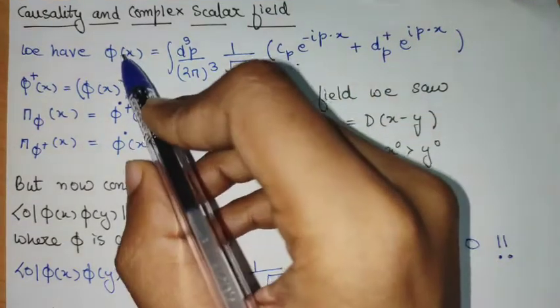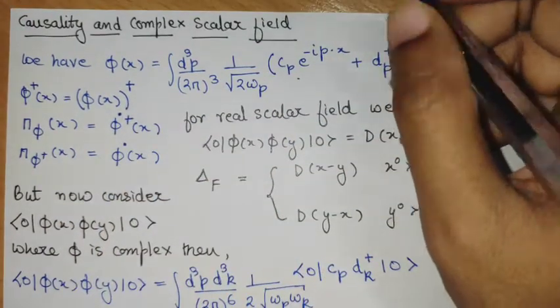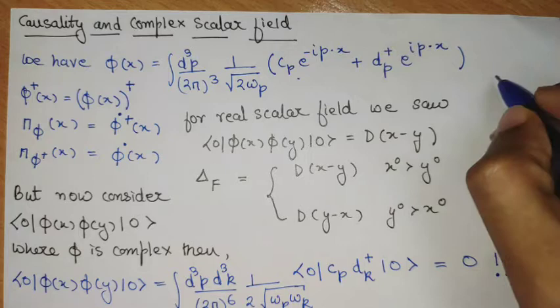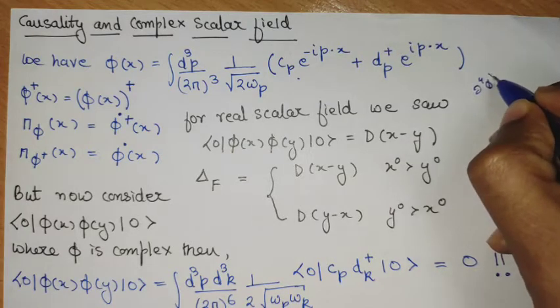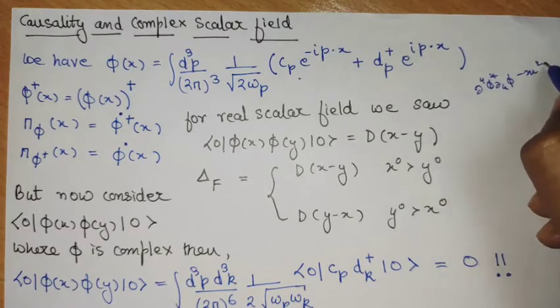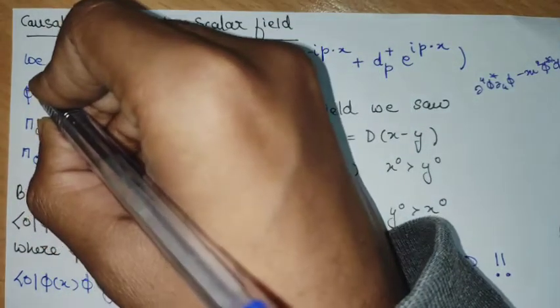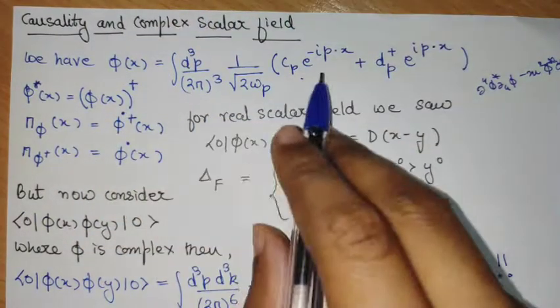So this was the operator phi and then phi dagger operator or phi star, because the Lagrangian was written in the form of del mu phi star del mu phi minus m square phi star phi.